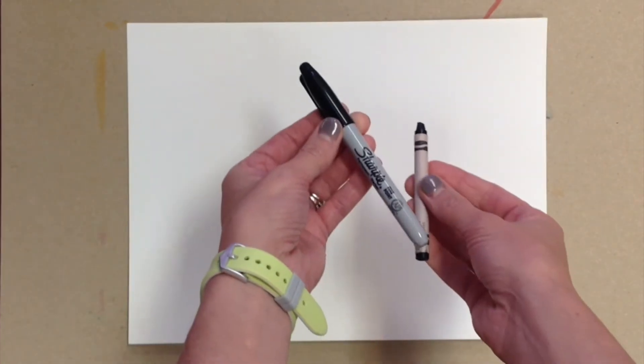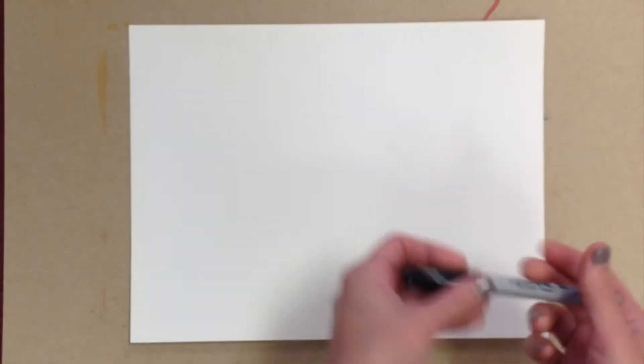You will need a black crayon or a black sharpie. Make sure you get permission first from a grown-up though.